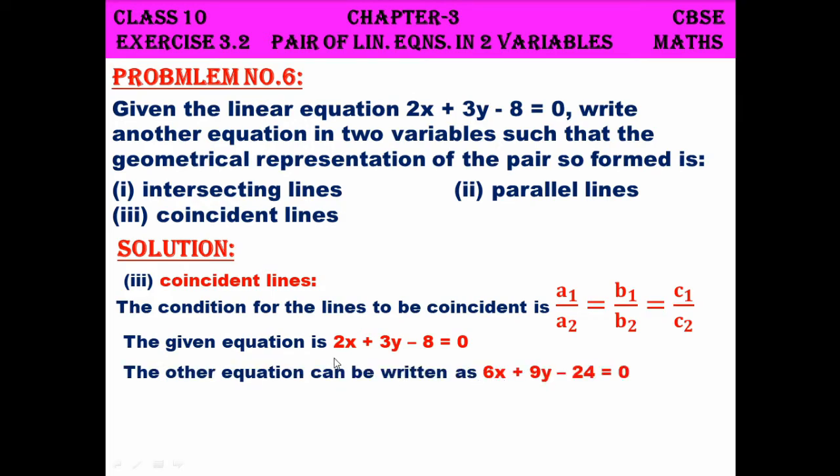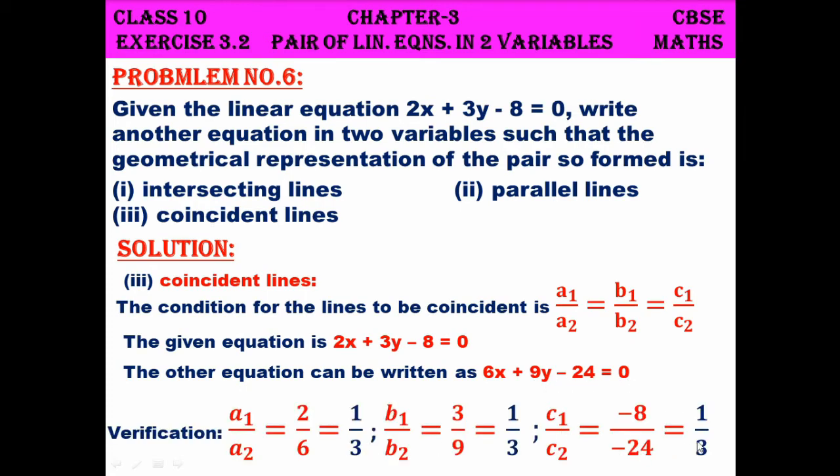Just as I did for the second subdivision, that's for parallel lines, I'll multiply by 3 throughout. In the second subdivision I didn't do it for the constant term, but here I do it for the constant term also. So I get 6x plus 9y minus 24. Now we verify all the ratios are 1 by 3. So this is an example for a pair of coincident lines.